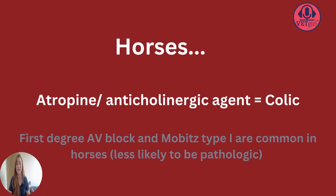A final note on horses: horses very often have first degree AV block or Mobitz Type 1 second degree AV block, which is more likely to be vagally mediated given their very high parasympathetic tone — much less likely to be pathologic. So there is a much lower indication to ever do an Atropine Response Test on horses. More importantly, because Atropine is an anticholinergic agent, you may induce colic in a horse, which is far more concerning than the first degree AV block was. So it's very rare to do it in horses, and if needed, have the cardiologist do it so if something goes wrong you can fully blame it on them.